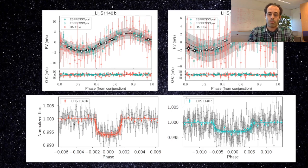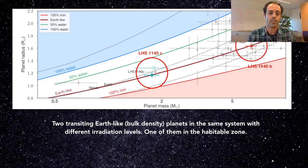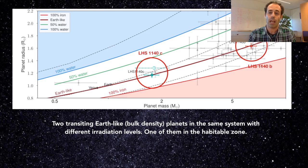This dataset has allowed us to determine the properties of these two planets with unprecedented precision, and their mass and radius now place these two planets on top of the earth-like bulk density line in this mass radius diagram.